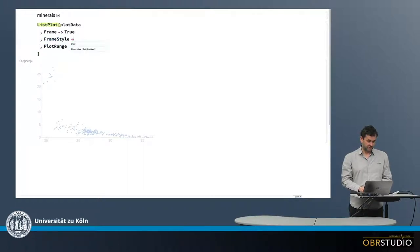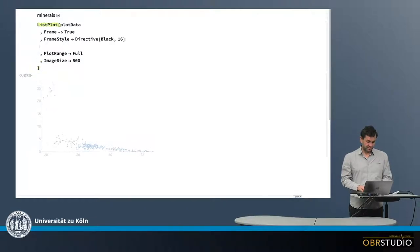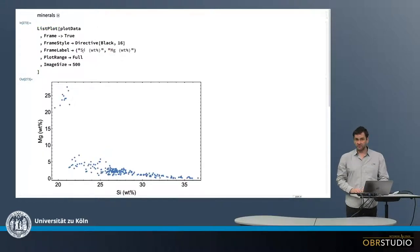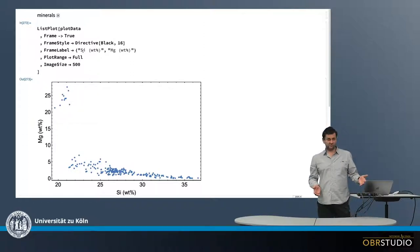I add some frame styling, like should be black, otherwise it's a little gray. And 16. And then the image size should be a little larger. And of course we need some labeling for the axis. So on the x-axis this is silicon in weight percent. And on the y-axis this is magnesium also in weight percent. So this should now look much better. And basically we are done with the first plot because this is now showing the data here.